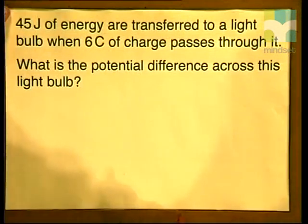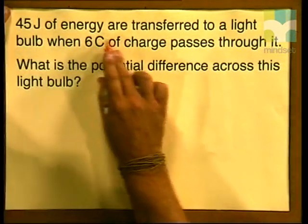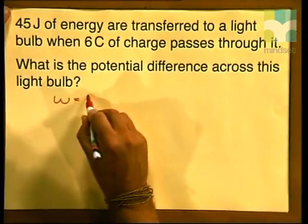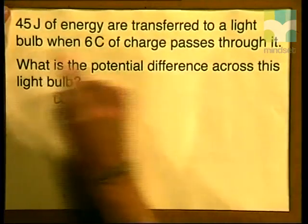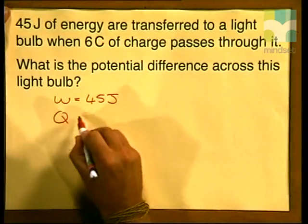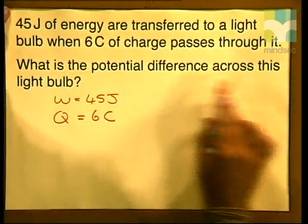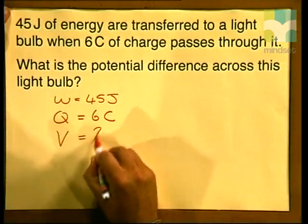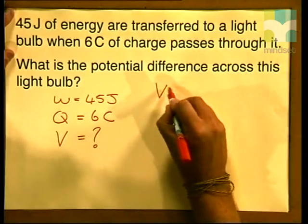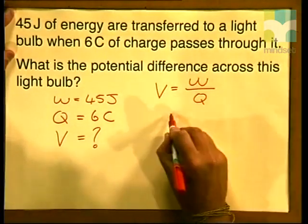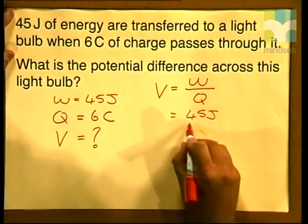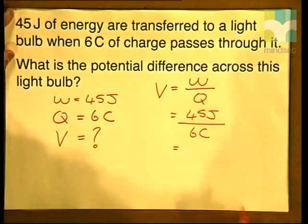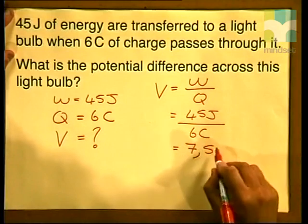Firstly, we write down the values that we are given. Work done W is equal to 45 joules, and charge Q is equal to 6 coulombs. V is what we're trying to calculate. Now that we've written the information down, we write down the formula V equals W over Q and substitute the values: V equals 45 joules divided by 6 coulombs, giving us an answer of 7.5 volts.